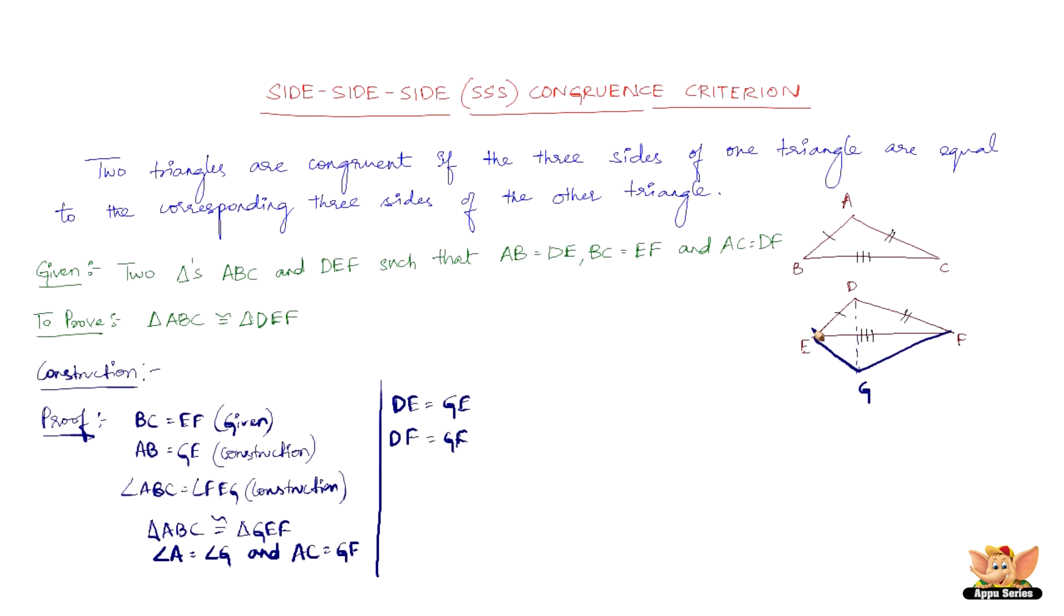So therefore in triangle EGD we have DE equals GE. And we have angle EDG equals angle EGD.